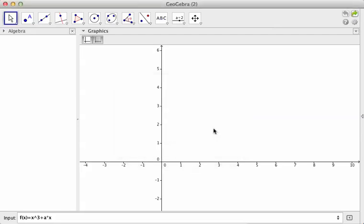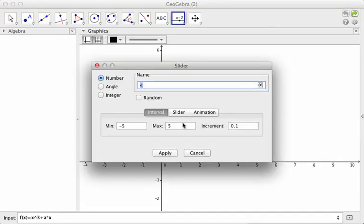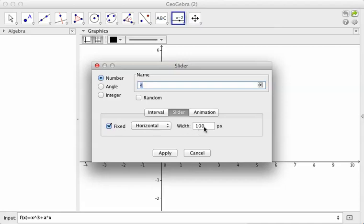So what I need to do is I'm going to create a slider with the name a. We want it to be a number. We can change the interval to whatever we like, we can change the increment to whatever we like, and we can also determine whether we want it to be horizontal, whether we want it to be vertical, and exactly how long I want the slider in terms of pixels. Right now we'll just look at from negative 5 to 5, increments of 1 tenths. Say apply.